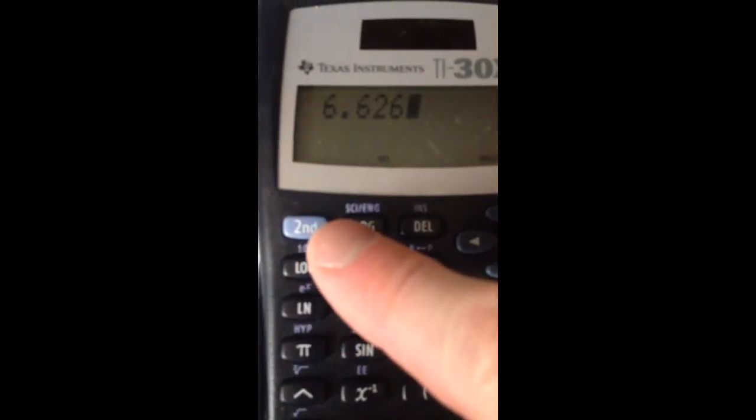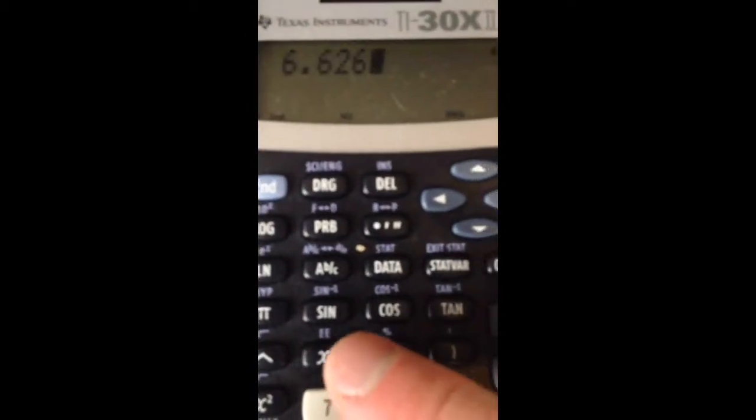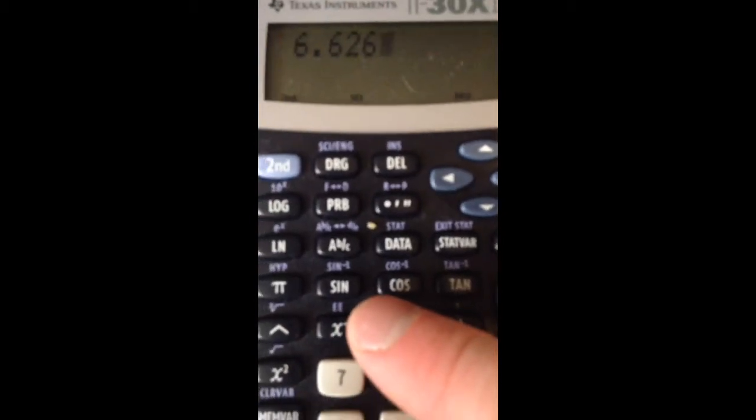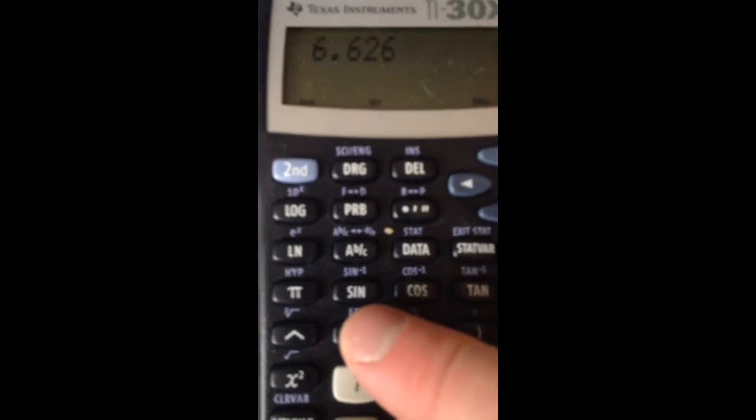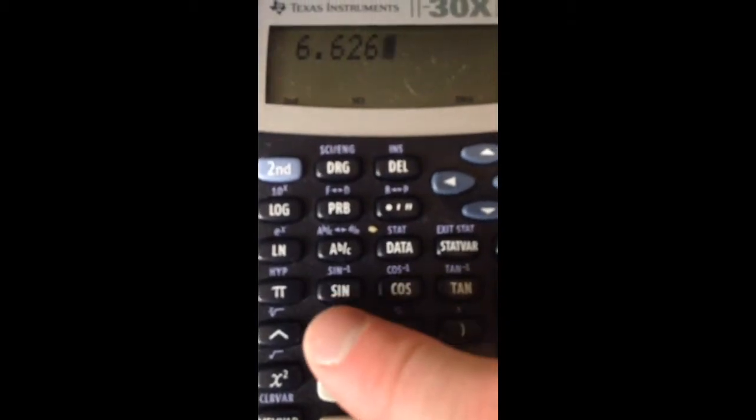I'm then going to hit the second key. See that second? Second. And then right there, see the EE key right above that? X to the negative 1 button. That's what I'm going to punch in next. See, puts in that E there in my calculator.